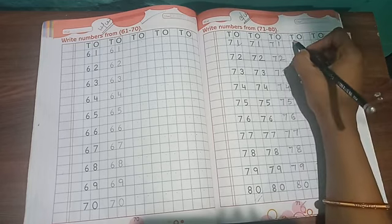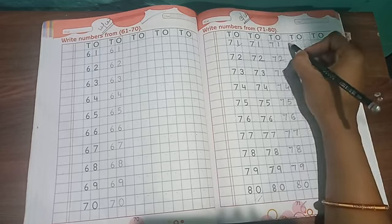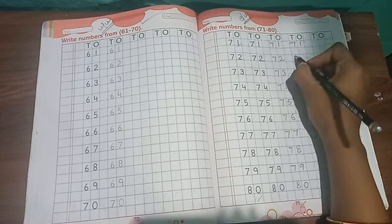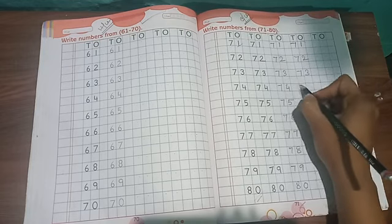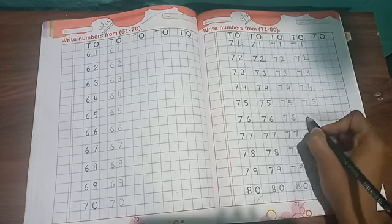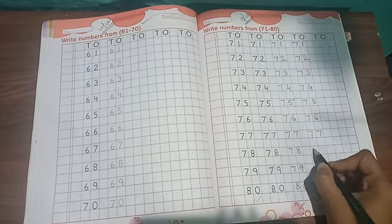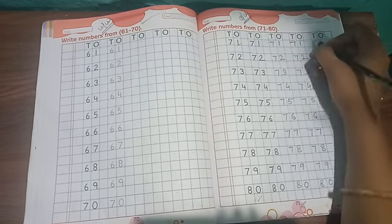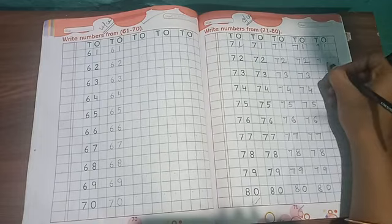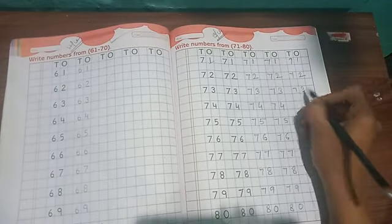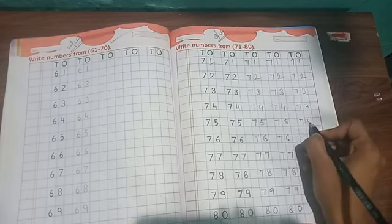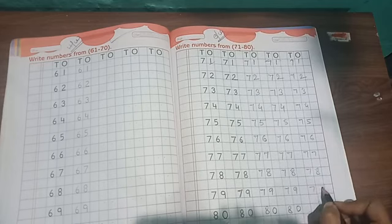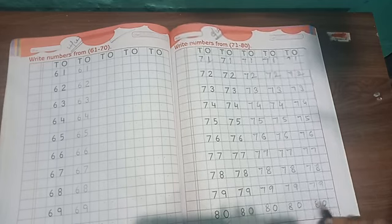Again write: 71, 72, 73, 74, 75, 76, 77, 78, 79, 80. Complete it like this way, you will practice it.